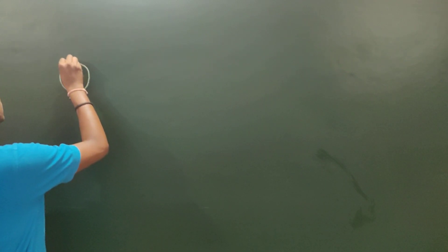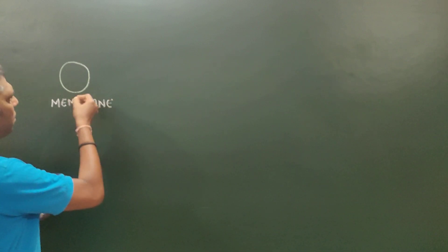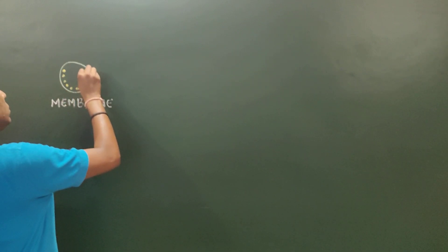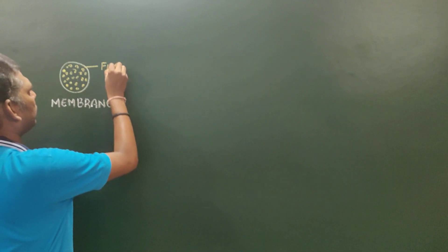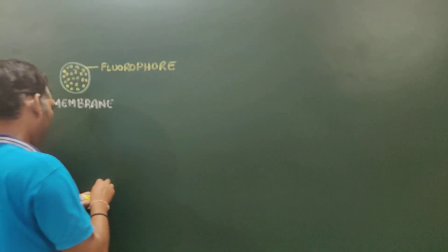Suppose that this is a plasma membrane, which has the composition of lipid and phospholipid. We tag this membrane with several fluorophore molecules. Fluorophores are those molecules which show the property of fluorescence.